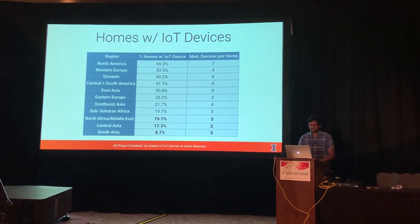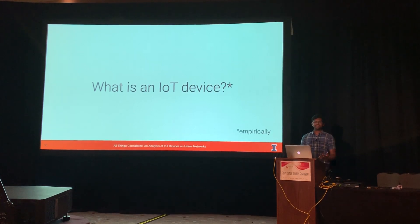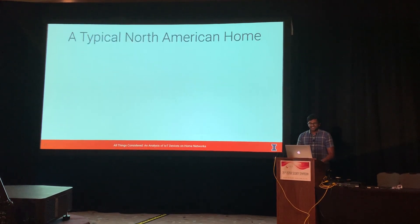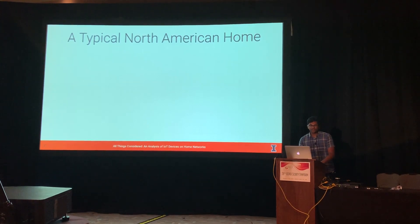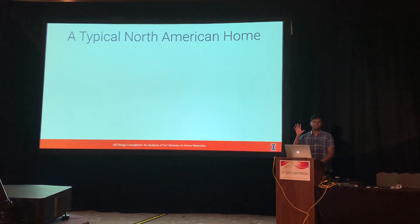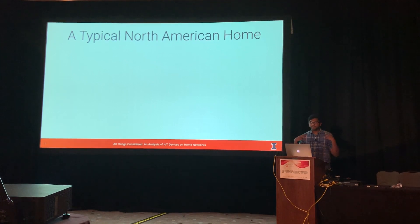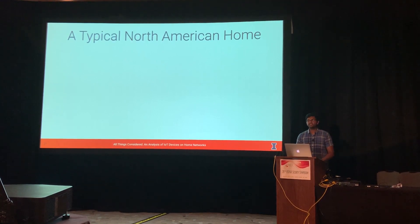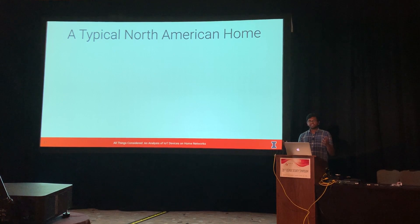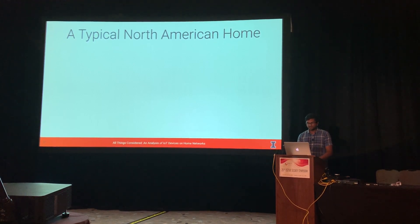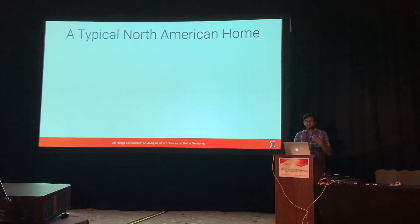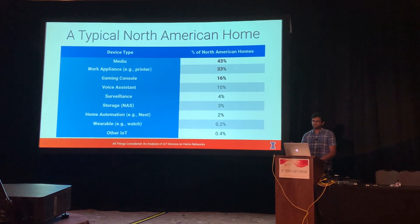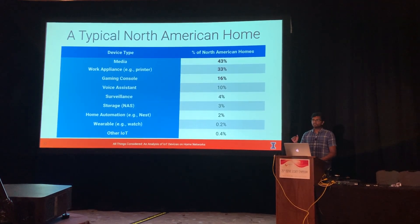We're already seeing differences in IoT deployment around the world. The next question we asked was: empirically, based on this dataset, what are these devices? To dig in, let's look at a typical North American home. My biases before starting this project were that Americans probably have Alexas, toasters, light bulbs, and hair straighteners. But I was surprised to find that the top devices in North American homes are actually media devices, printers, and game consoles — not things we typically think about when talking about IoT.